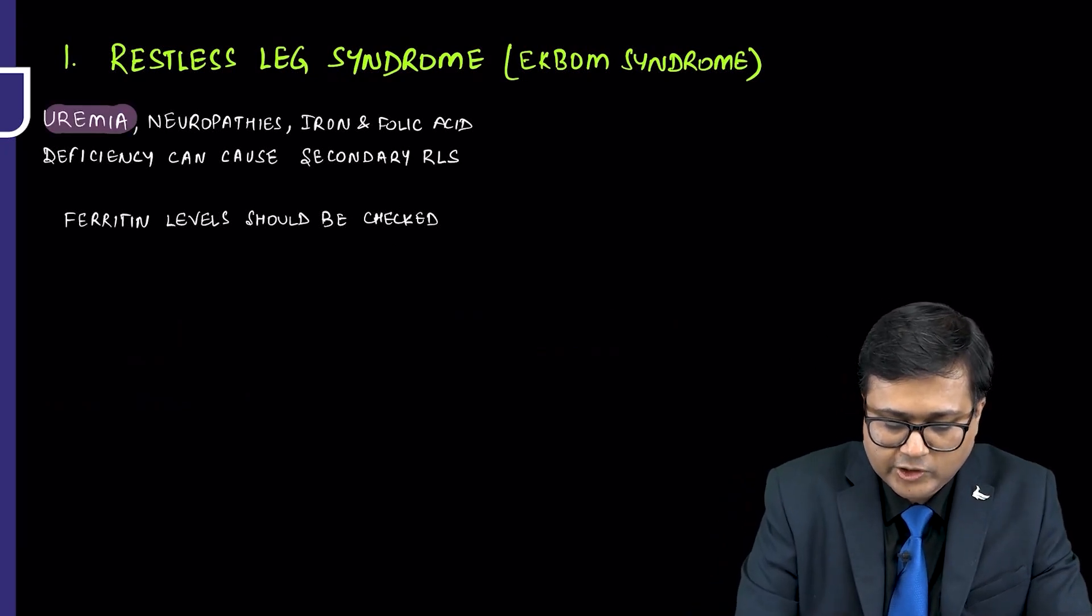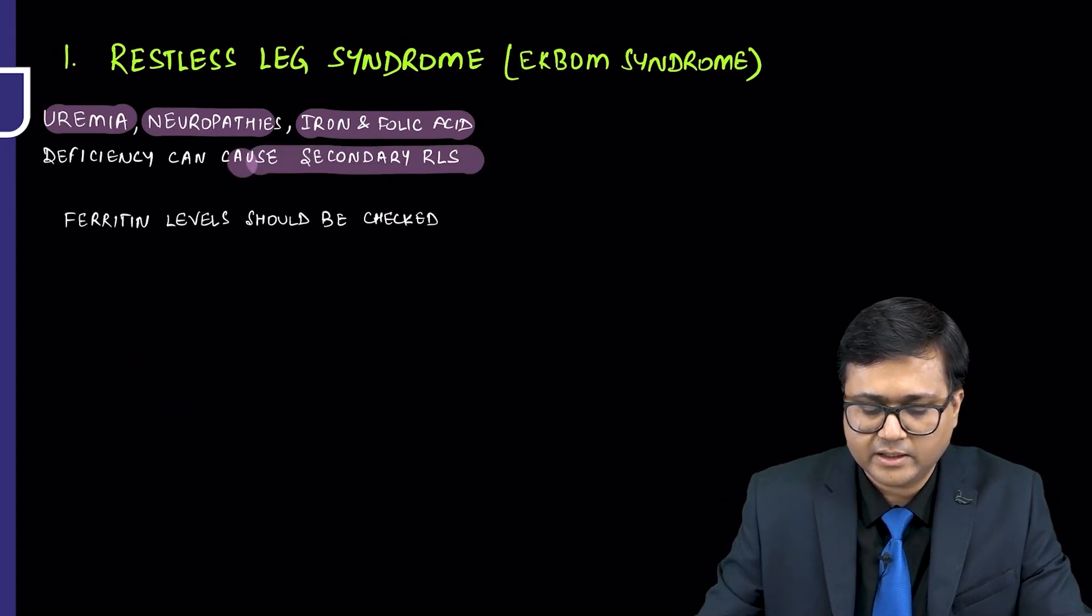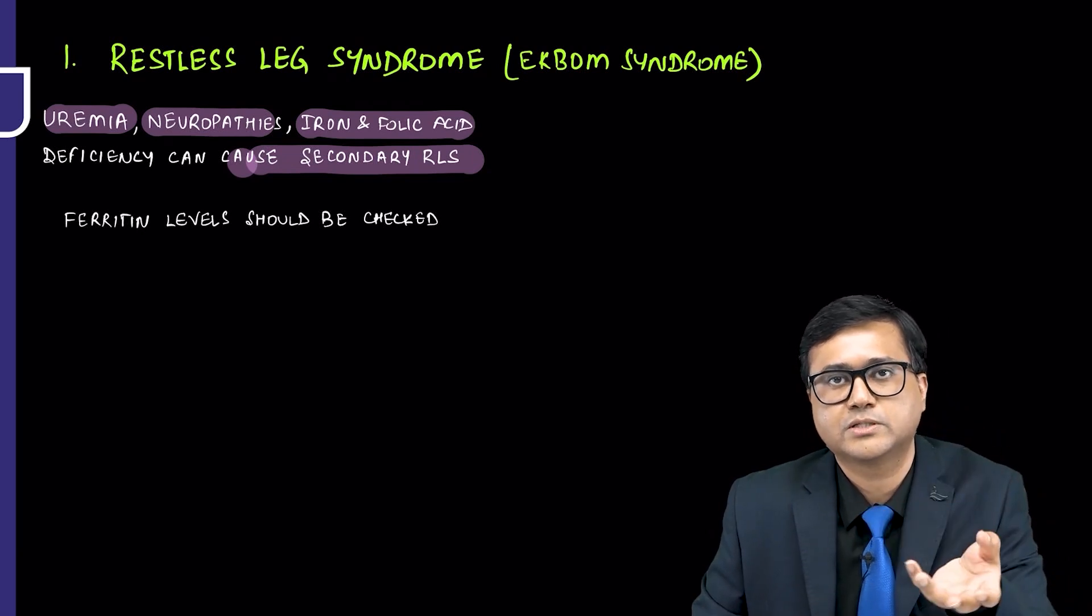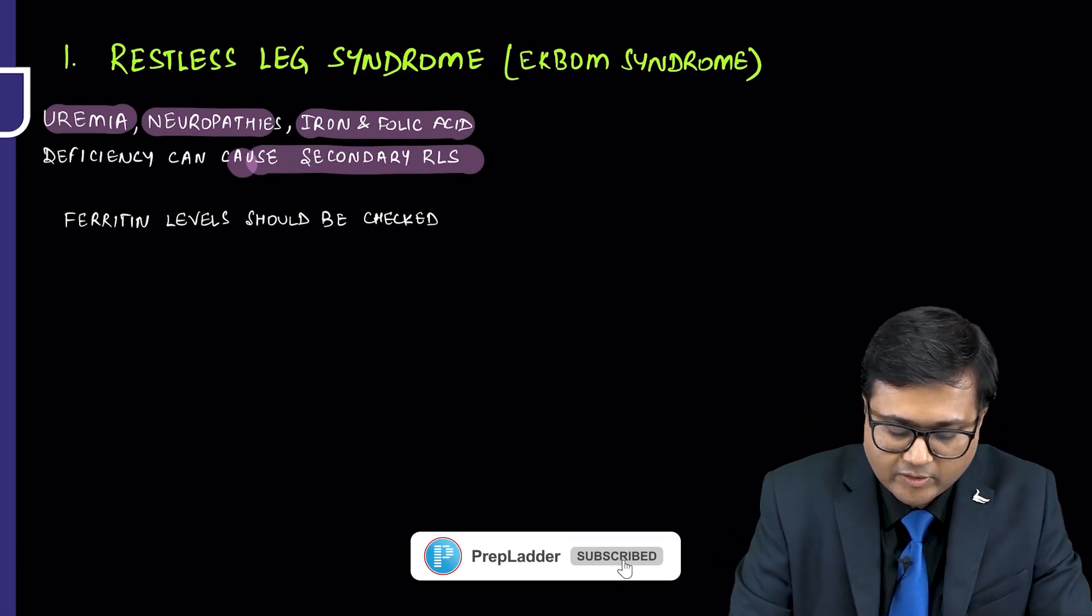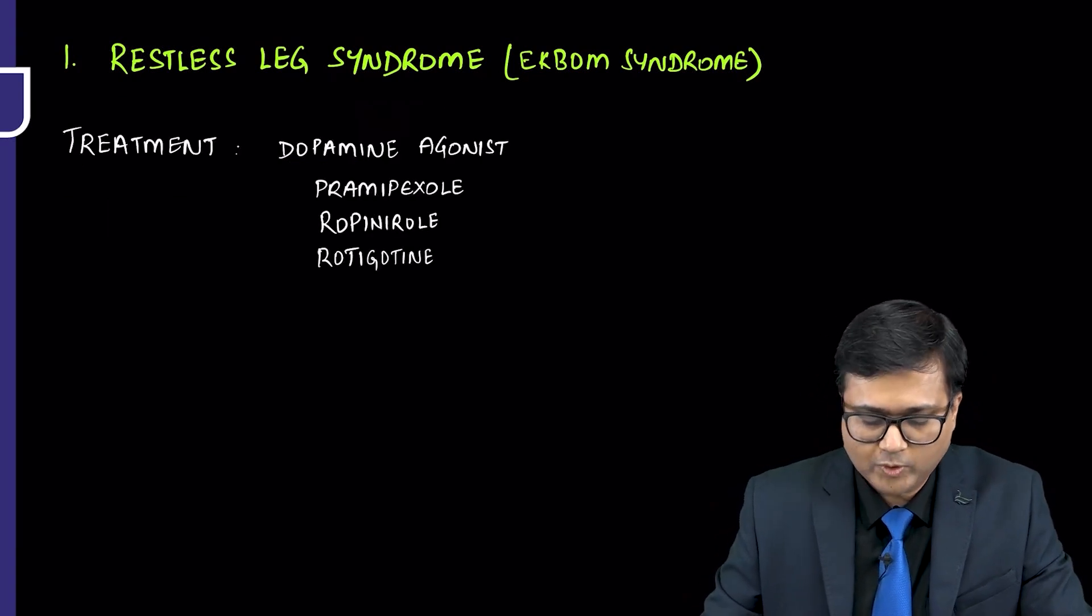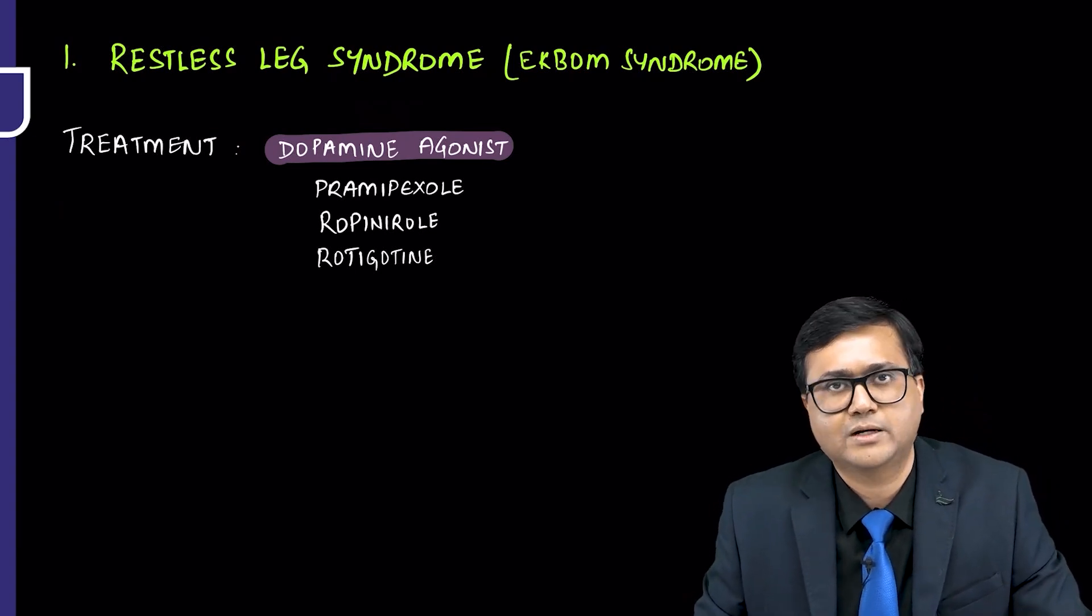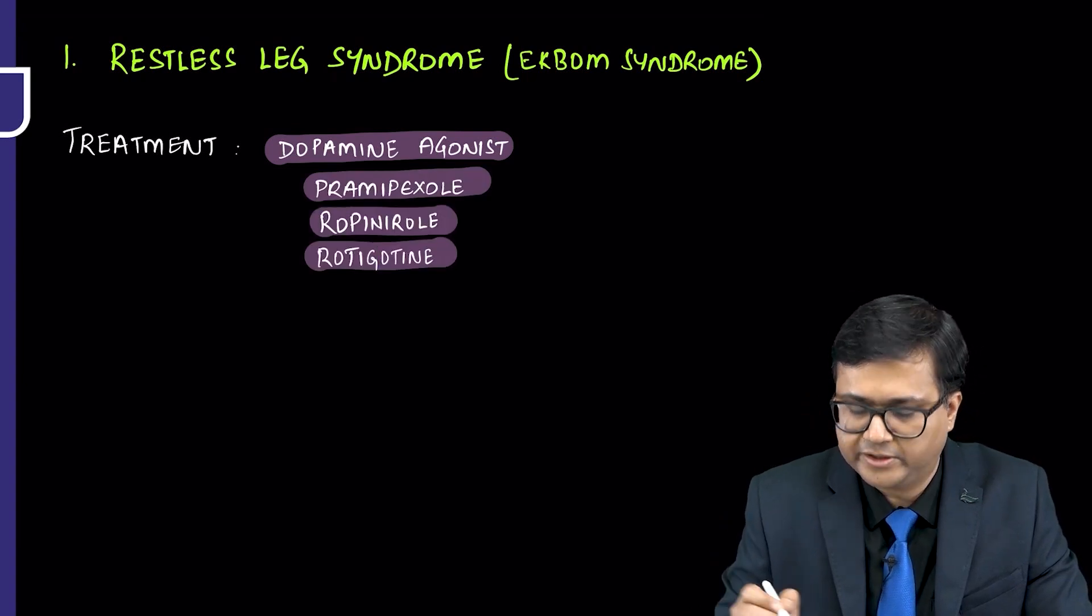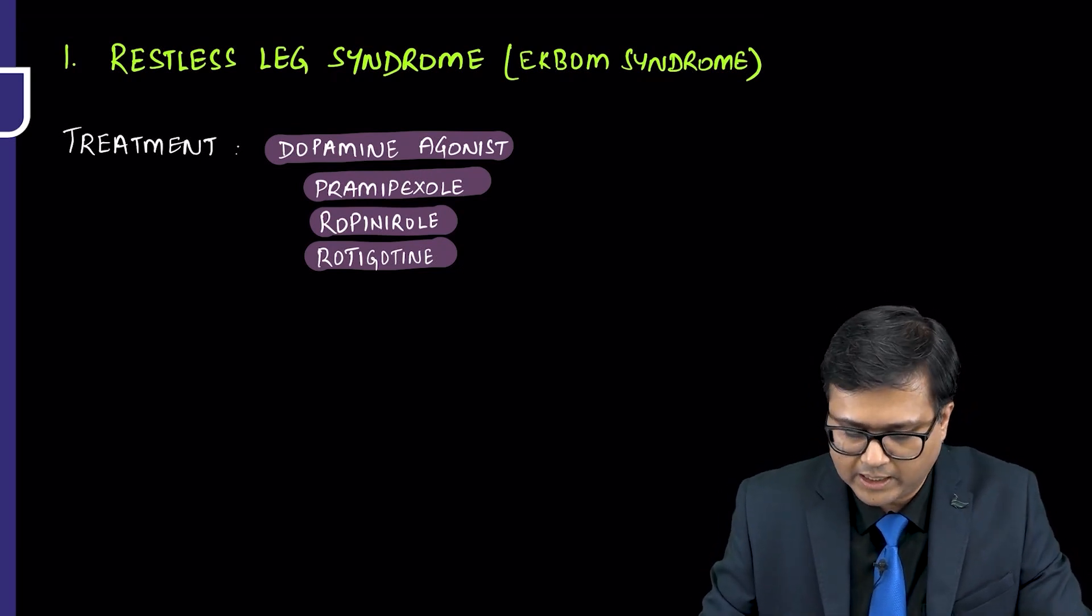Uremia, neuropathies, iron and folic acid deficiencies can cause secondary restless leg syndrome. When we are seeing such patient, you need to see that some of these important abnormalities may be seen in these patients. Ferritin levels should be checked in all the patients of restless leg syndrome. When we talk about treatment, three dopamine agonists which have been approved by the FDA for treatment of restless leg syndrome are pramipexole, ropinirole, and rotigotine. These are three important dopamine agonists which have been approved by the FDA for RLS treatment.